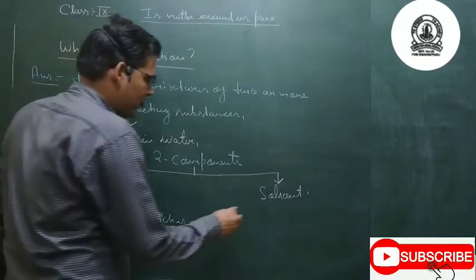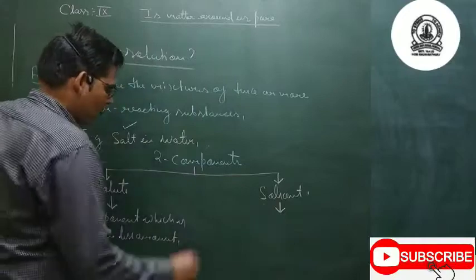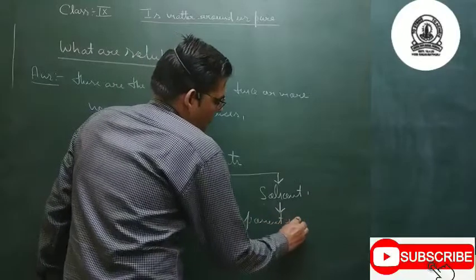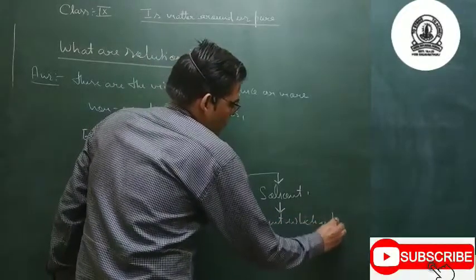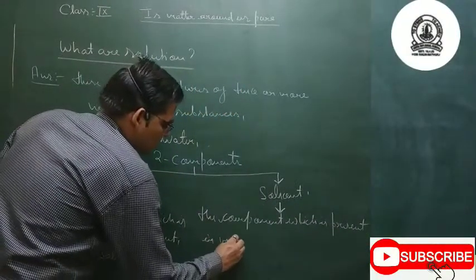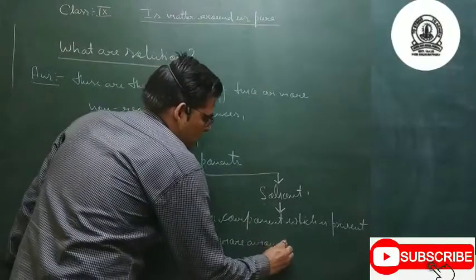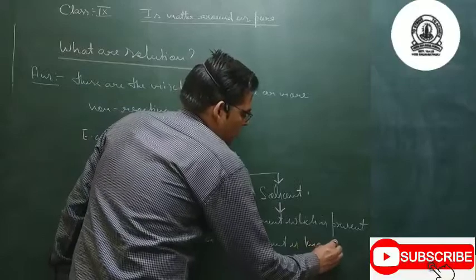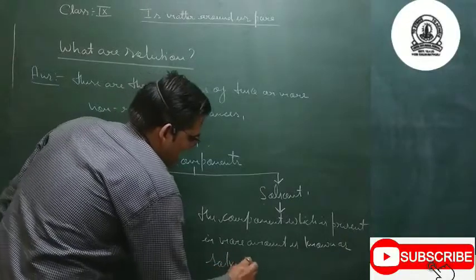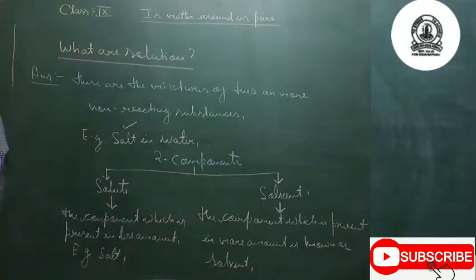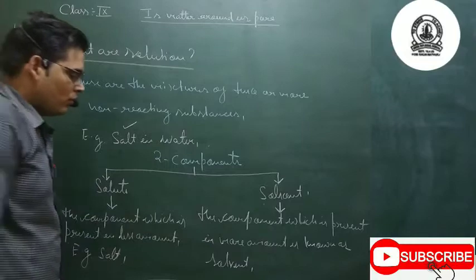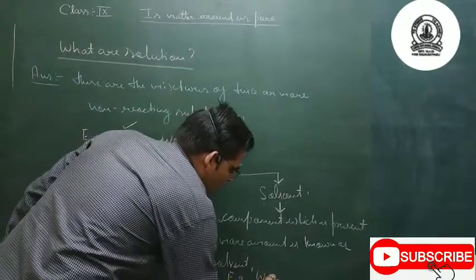Then we will see solvent. The component which is present in more amount is known as solvent, or you can say that the component in which the solutes are dissolved is known as solvent. In the case of this example, salt is dissolved in water, so water is the solvent here.